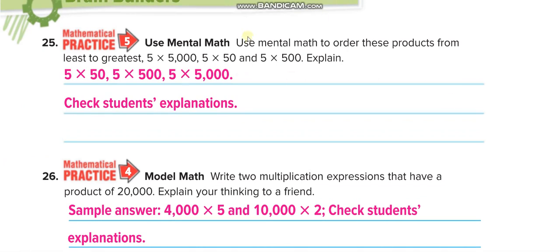Use mental math to order these products from least to greatest. We look at which has the fewest zeros. The order is: 5 times 50, then 5 times 500, then 5 times 5,000 — from least to greatest.